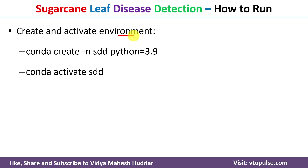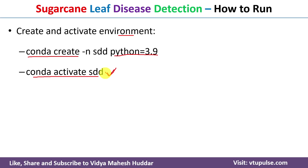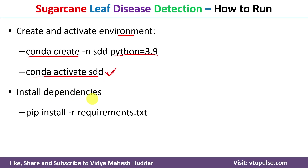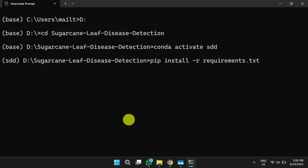To create and activate the virtual environment, use the command: 'conda create -n sdd python=3.9'. Here, 'sdd' is the virtual environment name, and Python 3.9 is installed into it. After creating the virtual environment, activate it using 'conda activate sdd'. Once activated, install all necessary dependencies using: 'pip install -r requirements.txt'.